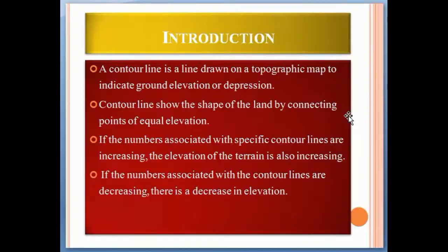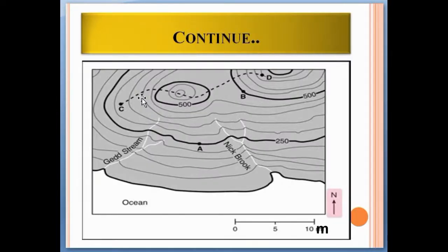A contour line is a line drawn on a topographic map to indicate ground elevation or depressions. Contour lines show the shape of the land by connecting points of equal elevations. If the numbers associated with specific contour lines are increasing, the elevation of the terrain is also increasing. If the numbers are decreasing, there is a decrease in elevation.